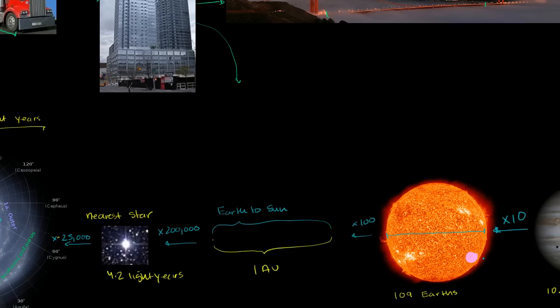Because if we want to get to the nearest star, so remember, the Sun is 100 times the diameter of the Earth. The distance between the Sun and the Earth is 100 times that. Or you could say it's 10,000 times the diameter of the Earth. So these are unimaginable distances. But to get to the nearest star, which is 4.2 light years away, it's 200,000 times, and once again, unimaginable, it's 200,000 times the distance between the Earth and the Sun.